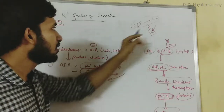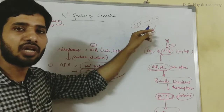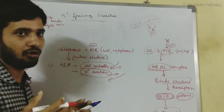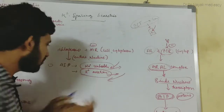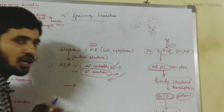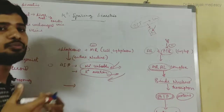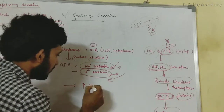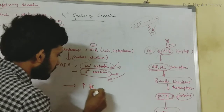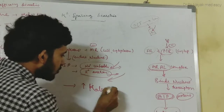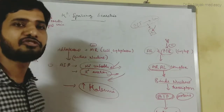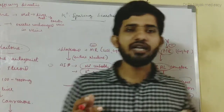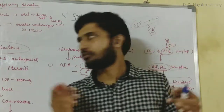Spironolactone causes sodium excretion and potassium reabsorption from the distal convoluted tubule and collecting duct of the nephron. By this action, spironolactone increases potassium reabsorption and can lead to hyperkalemia. This is the mechanism of action of spironolactone.